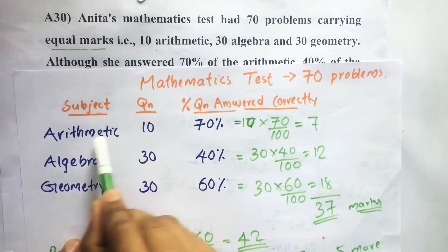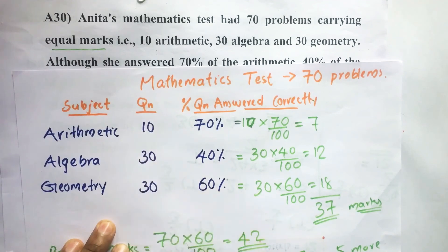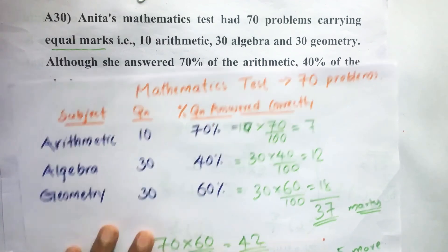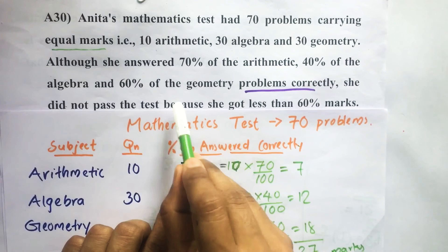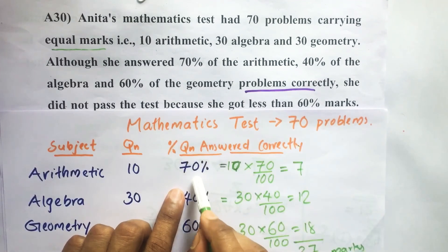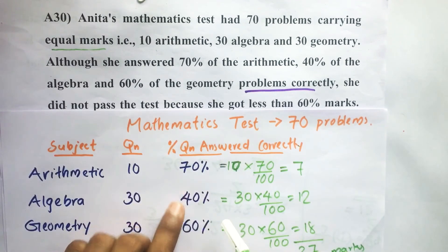There are three subjects: arithmetic has 10 questions, algebra has 30 questions, and geometry has 30 questions. She answered 70% of the arithmetic questions, 40% of the algebra questions,